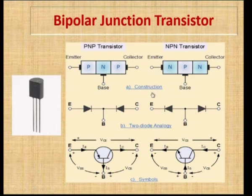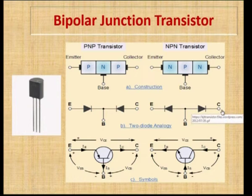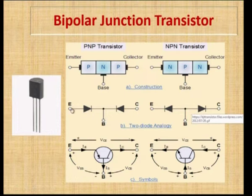This can be represented by a two diode analogy. For NPN, both anodes are connected to the base, the cathode of one diode is the Emitter, and the cathode of the other is the Collector. Similarly, the two diode analogy for PNP has both cathode terminals connected to the base, and the anode terminals connected to Emitter and Collector respectively.